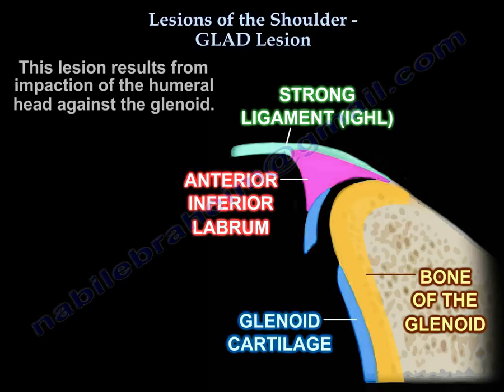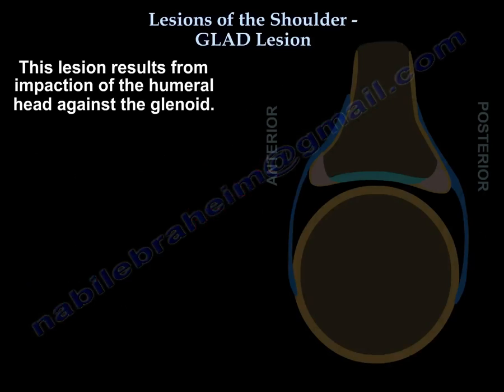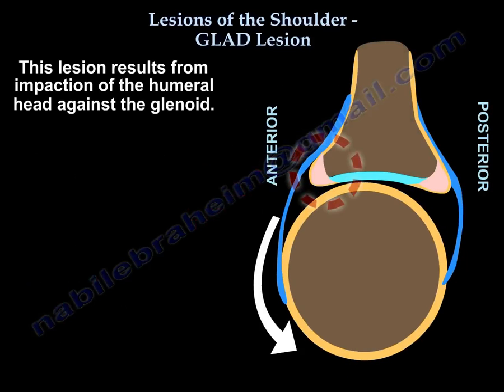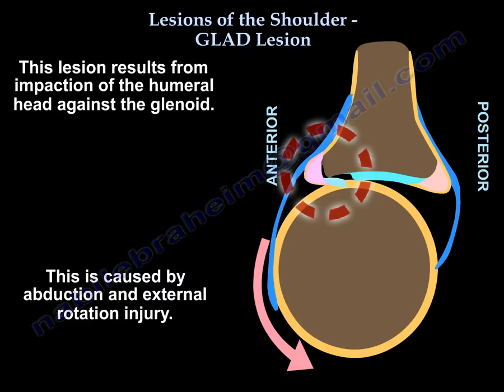This lesion results from impaction of the humeral head against the glenoid, caused by an abduction and external rotation injury.